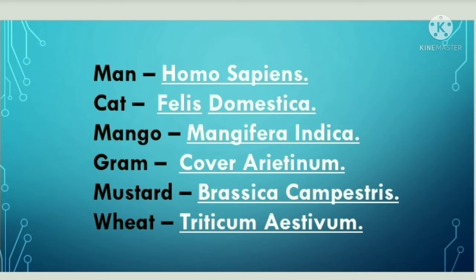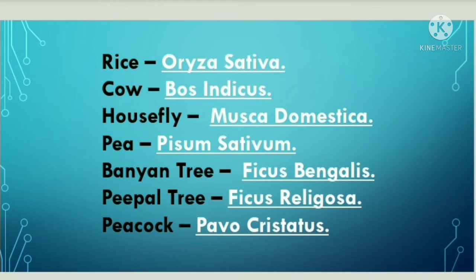Scientific name of mustard is Brassica campestris. Scientific name of wheat is Triticum aestivum. Scientific name of rice is Oryza sativa. Scientific name of cow is Bos indicus. Scientific name of housefly is Musca domestica.